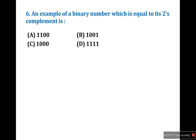Sixth question: an example of a binary number which is equal to its two's complement. Find the one's complement and two's complement for each option. I'll select option B: 1001. Its one's complement is 0110. Adding 1 gives 0111, which is not equal to 1001, so B is not the answer.